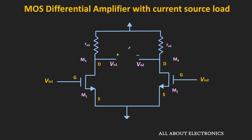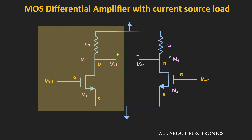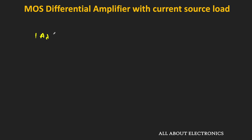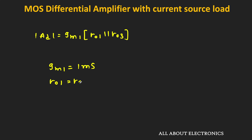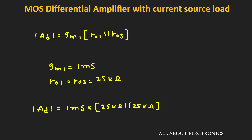We are assuming that R03 is equal to R04. Since the circuit is symmetric, using the half differential circuit, we can easily find the differential gain. In this case, the differential gain is equal to GM1 times R01 in parallel with R03. Now if this current source is ideal, then R03 is equal to infinite. But because of the finite output impedance, it will also come in parallel with R01, and the differential gain will reduce. For example, if GM1 is equal to 1 mS and R01 and R03 are both 25 kΩ, the differential gain is equal to 1 mS times (25 kΩ ∥ 25 kΩ), which equals 12.5. So by using the current source as a load, there is only a marginal improvement in the differential gain.